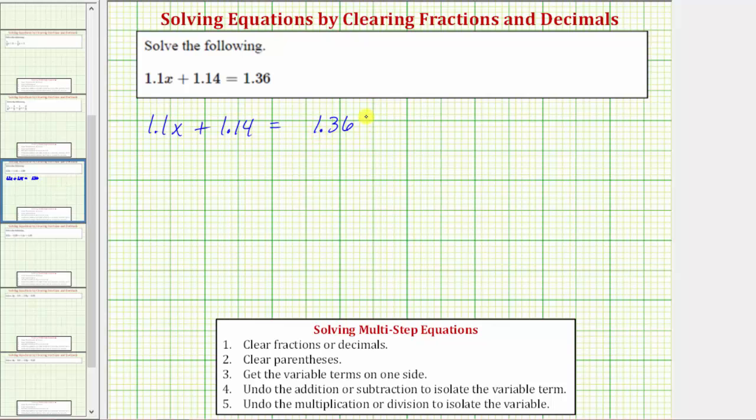In order to solve the equation for x, we need to isolate x on one side of the equation. But because the equation contains decimals, we first need to decide whether to solve with decimals or multiply both sides by a value that will clear the decimals. In this video, we will be clearing the decimals before we solve.